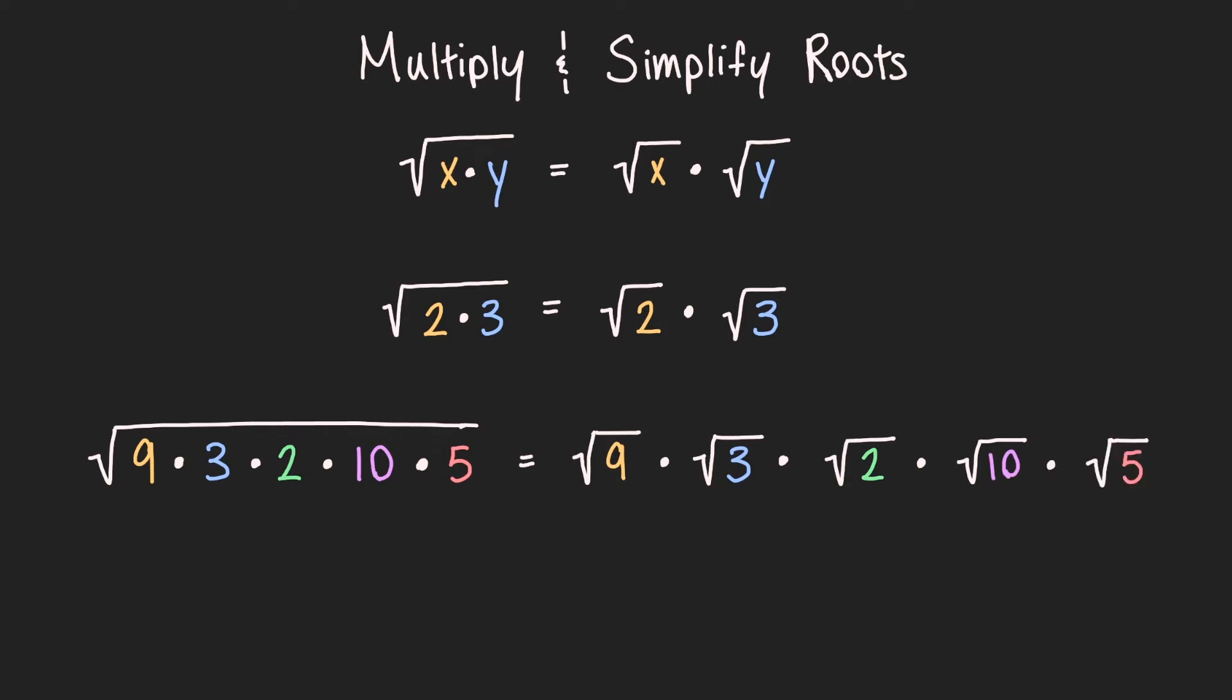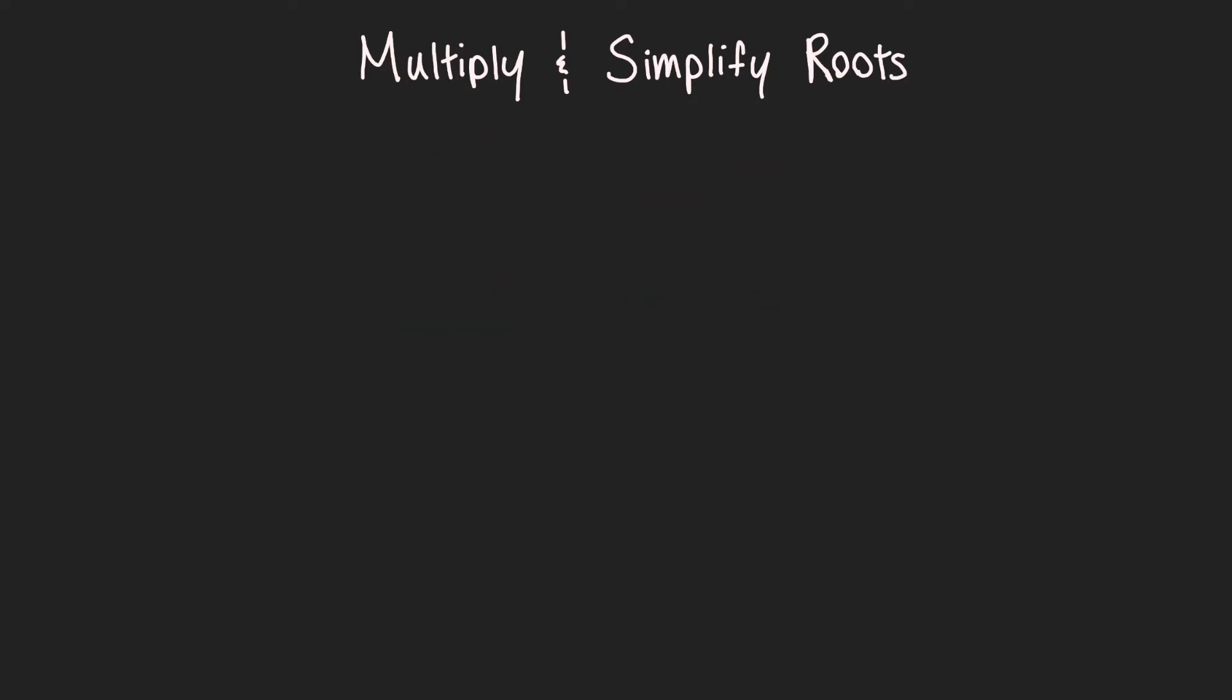And the cool part is, we can also go backwards. So this time, if we start off with two separate square roots, this will be the same as the square root of 7 times 8. And here's another thing we should probably talk about. If you multiply the same exact square root of the same exact number twice, it will just be equal to that number.